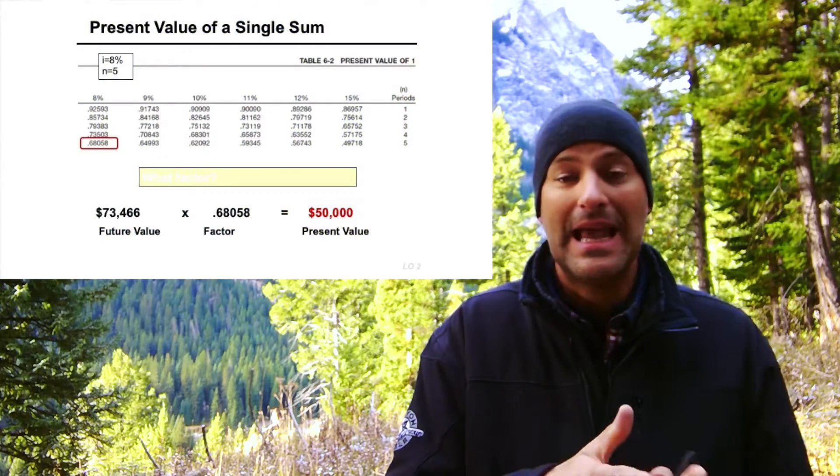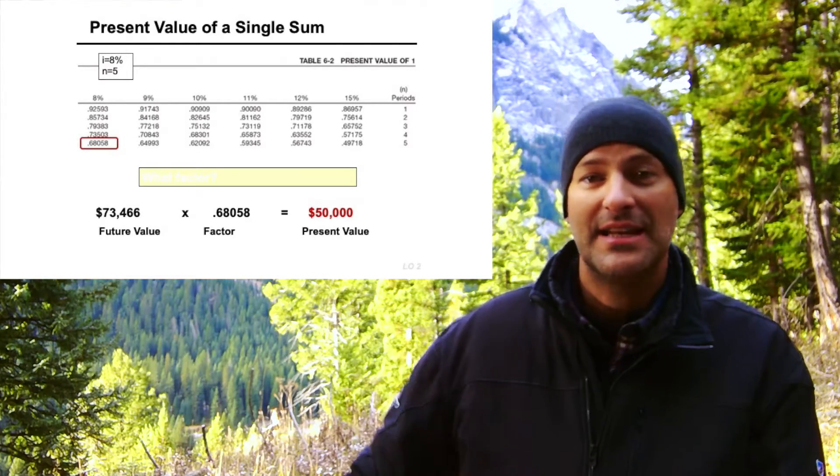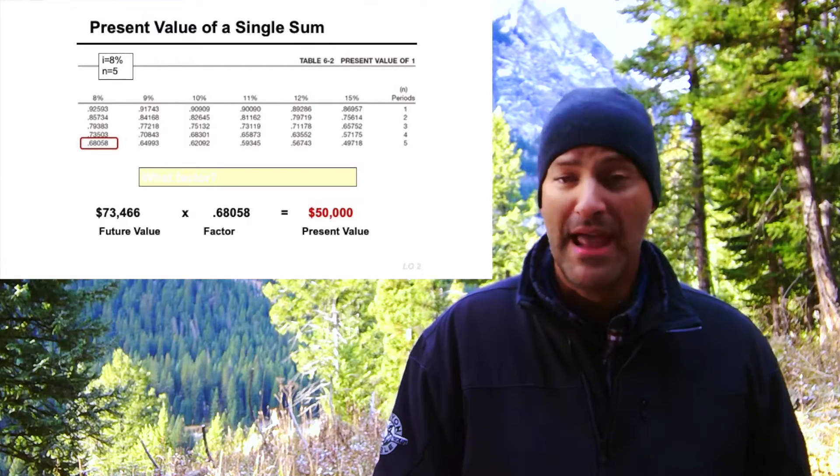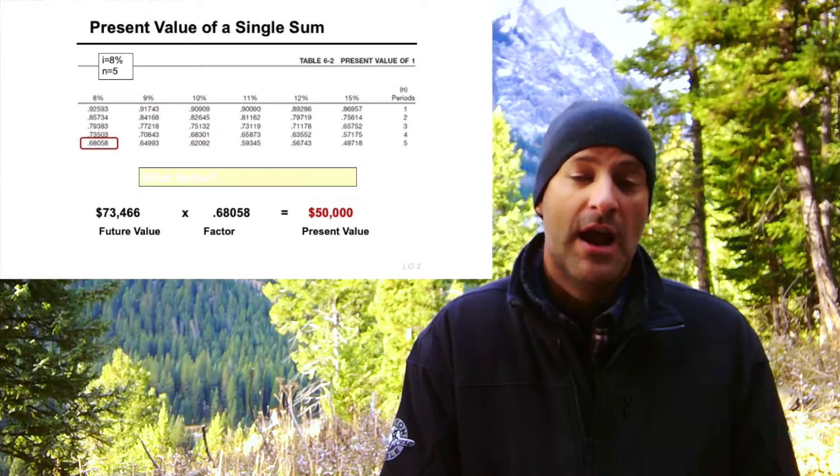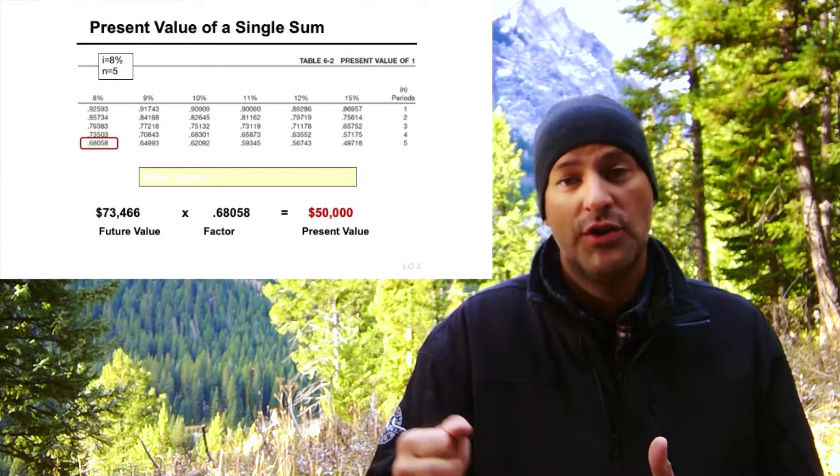One thing to keep in mind: your present value factors are always going to be less than one because the present value is always less than the future value when we discount it back — the present value dollars are growing into the future. A future value amount is always larger than the present value because the present value amount we're giving up needs to grow to more when we receive it in the future. Back to the basic concepts of time value of money. So our factor is 0.68, and if we discount back $73,466 five years at 8%, we end up with a present value of $50,000.